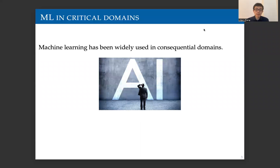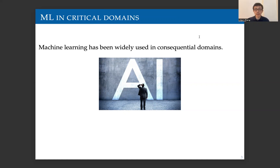Machine learning has been widely used in our daily lives, especially in many consequential domains nowadays, including college admission and disease diagnosis. Typically, a machine learning algorithm only gives us a prediction value. For example, in disease diagnosis, the machine learning algorithm typically gives us a probability of a patient getting a certain disease given some characteristics of this patient.